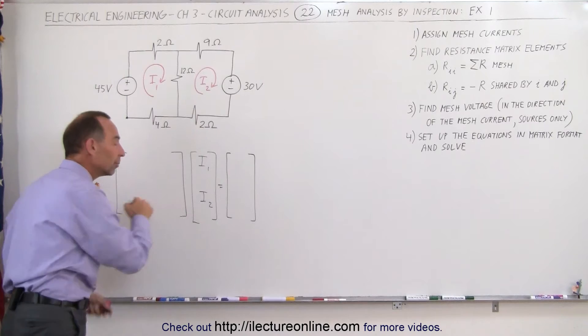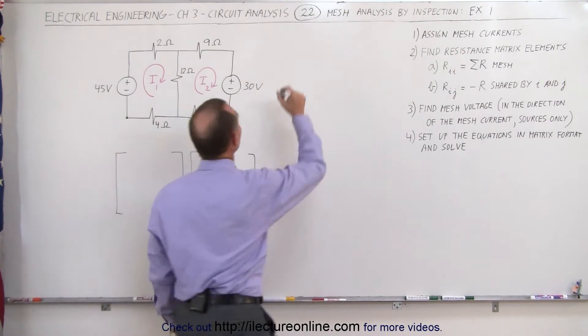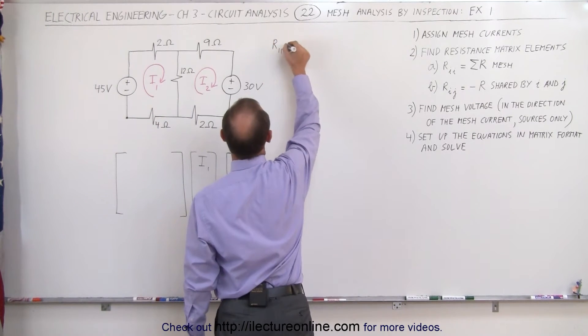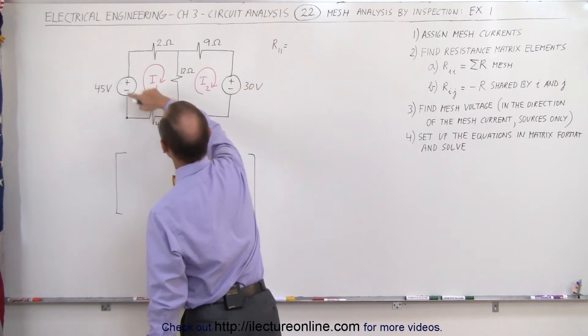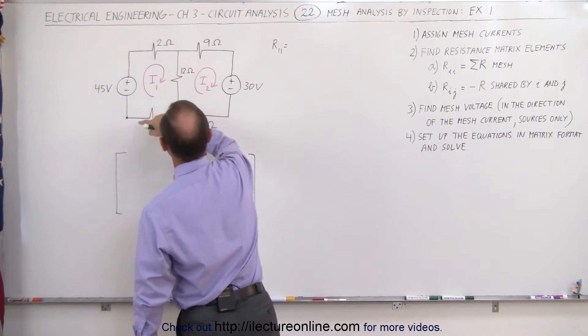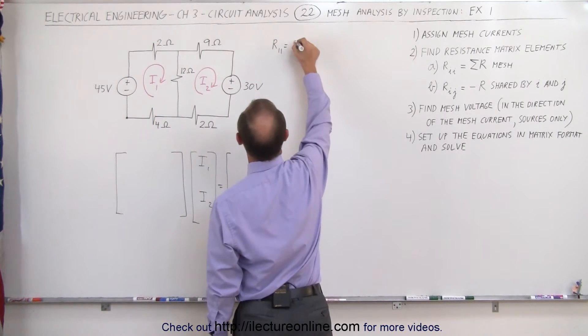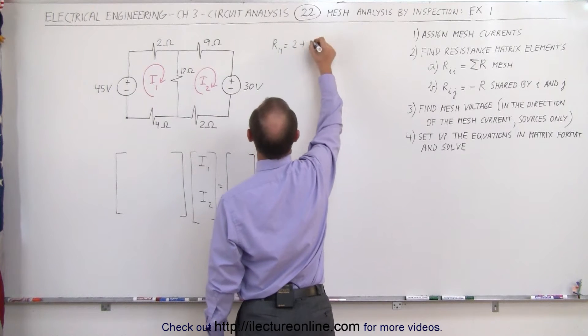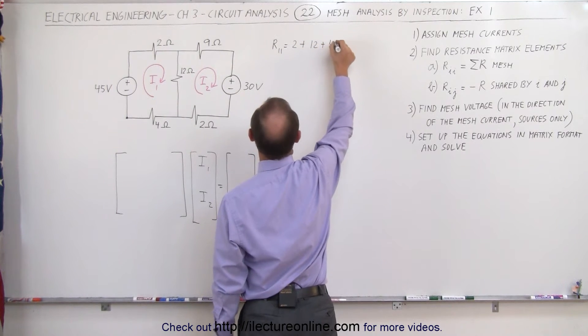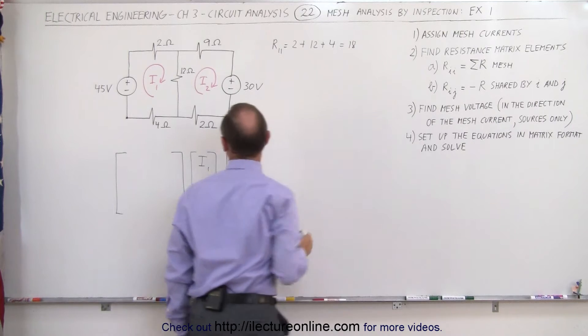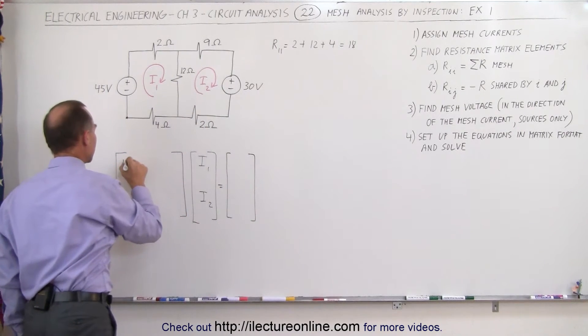We need to find the diagonal elements first. That means we need to find R11, and that is simply the sum of the resistances around mesh 1, which means it's equal to 2 plus 12 plus 4. That is equal to 18, and that becomes your element up here, 18.